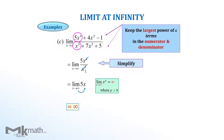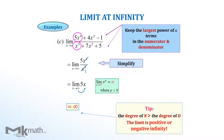Here is a shortcut tip: if the degree of the numerator is higher than that of the denominator, then the limit is either positive or negative infinity, depending on the sign of the infinity symbol or the power of x.